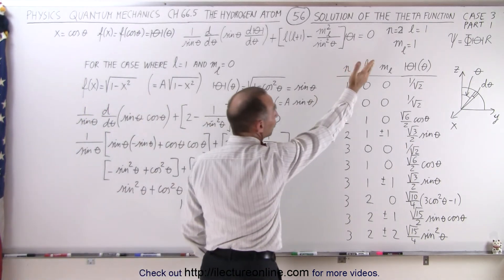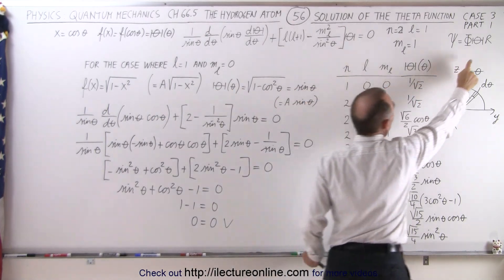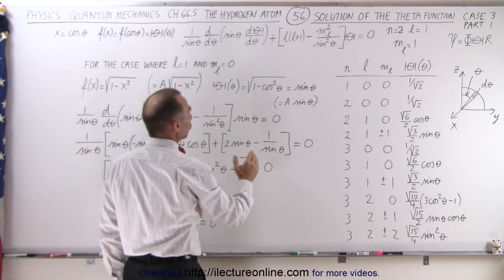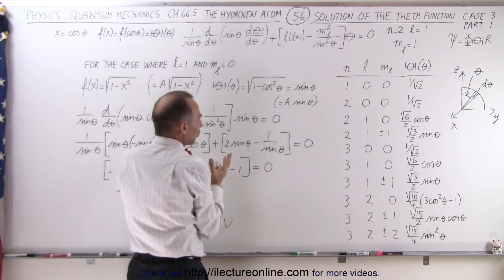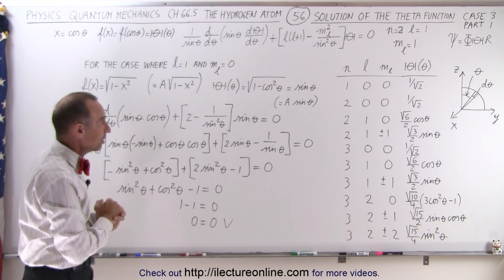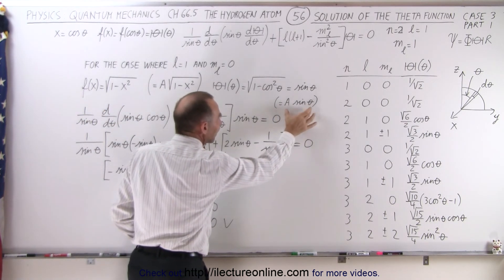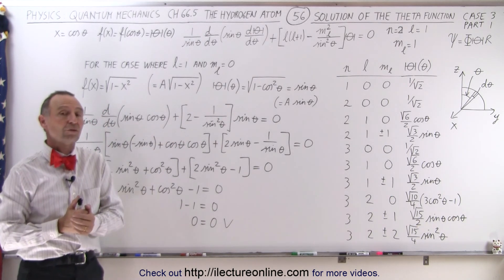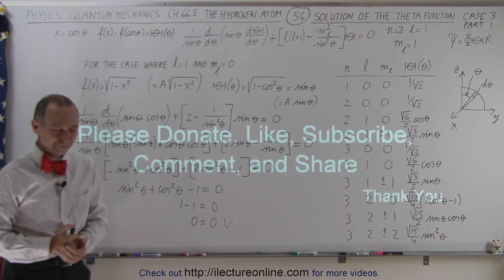In the case where L equals 1 and M sub L equals 1, the solution to the theta function — the middle function in our solution to the Schrödinger equation for the hydrogen atom — is indeed A times the sine of theta. We include A because there's a constant to determine, and on the next video we're going to find the value of A by normalizing the function to get the exact solution.